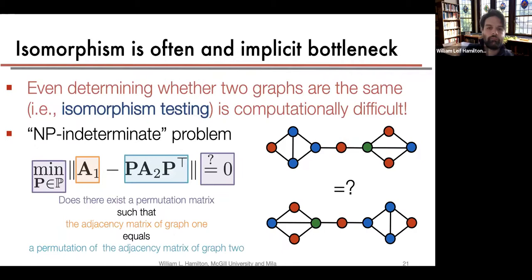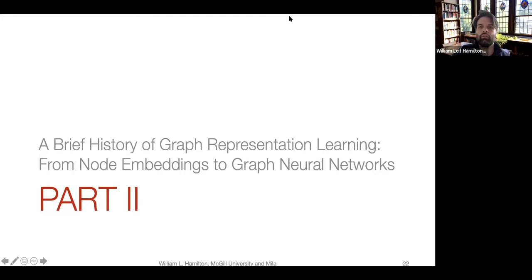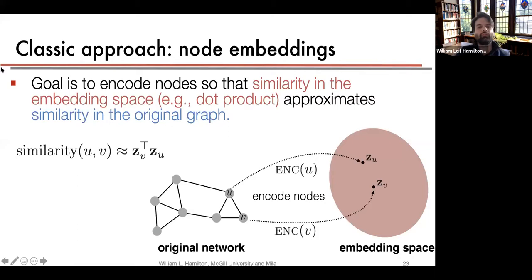That was a brief introduction to why representation learning on graphs is difficult. The dominant approach for many years — quite connected to multidimensional scaling and dimensionality reduction — is what we call node embedding. The idea is to map nodes in an input graph to a low-dimensional Euclidean space such that distances or dot products in that embedding space reflect similarity in the original graph.